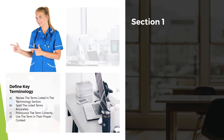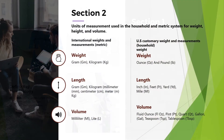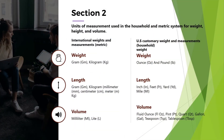Module 7, Section 1: Define Key Terminology. Review the terms listed in the Terminology section. Spell the listed terms accurately, pronounce the term correctly, and use the term in their proper context.